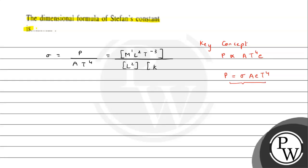Dividing further by K⁴ (Kelvin to the fourth power for temperature), we get the final dimension of Stefan constant as M¹L⁰T⁻³K⁻⁴. This is the dimensional formula of Stefan constant. I hope you understood the solution — all the best!